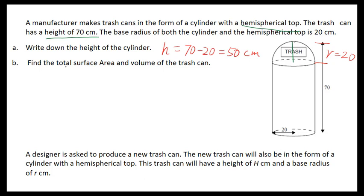For part B, find the total surface area and the volume of the trash can. For the surface area, we have three components: the bottom, which is πr²; then the lateral surface area of the cylinder, which is 2πrh; and the surface area of the hemisphere, which is 4πr² divided by 2.